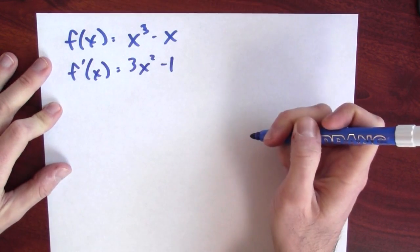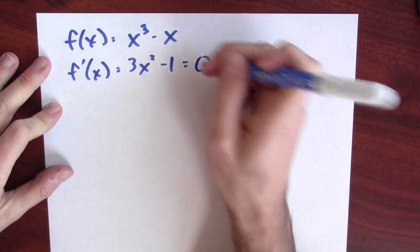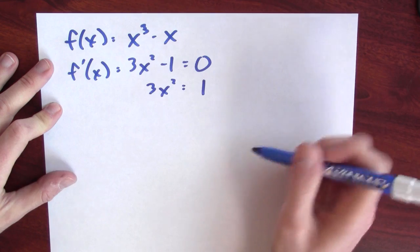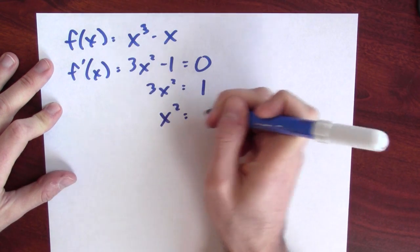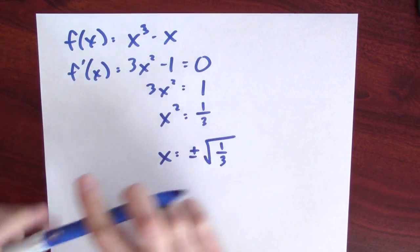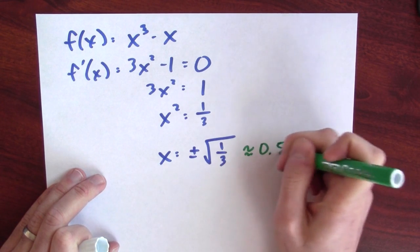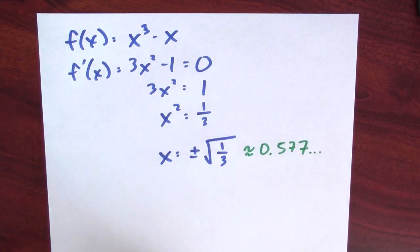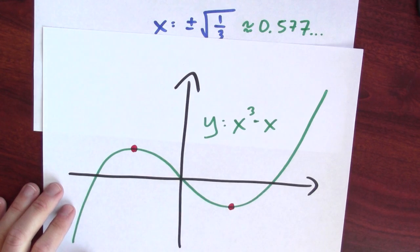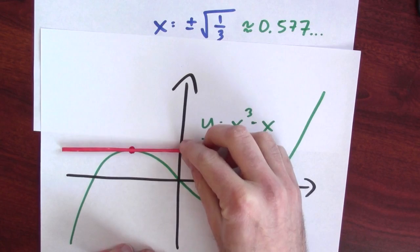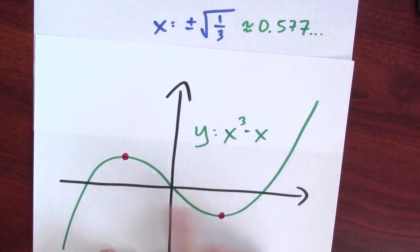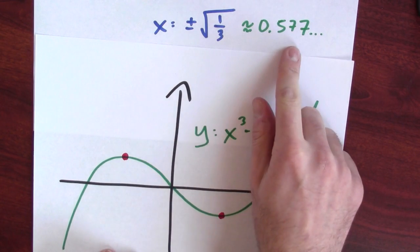But this function is differentiable everywhere. Its derivative is 3x squared minus 1. So the only critical points are going to be where the derivative is equal to 0. I'm looking for solutions to 3x squared minus 1 equals 0. Adding 1 to both sides: 3x squared equals 1. Dividing both sides by 3: x squared equals one-third. Taking the square root of both sides: x is plus or minus the square root of one-third, which is about 0.577. And that lets me find these critical points — these are places where the derivative is equal to 0, where the tangent line is horizontal. Now I know the x-coordinates of these two red points: about 0.577 and negative 0.577.